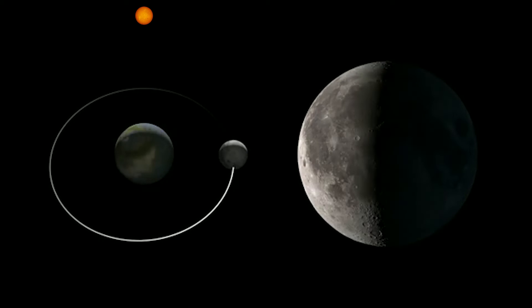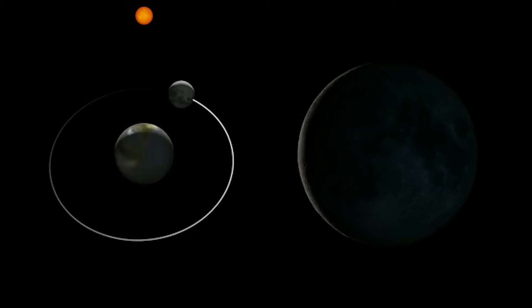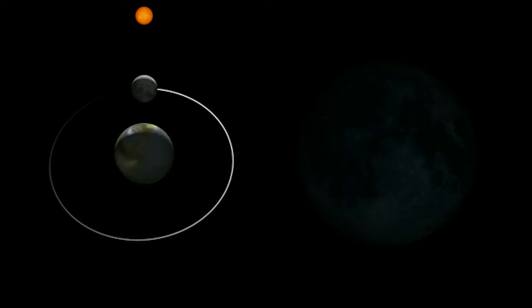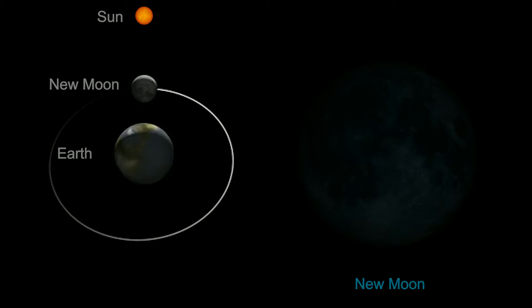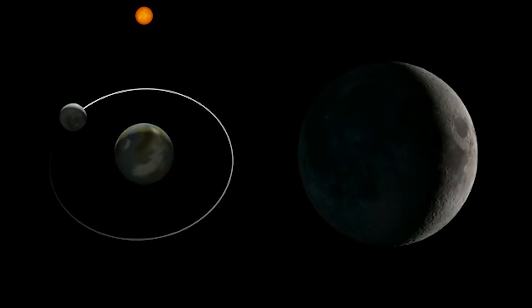Nearly 22 days after New Moon, the Moon is now at its last quarter phase. Eventually, in a further seven days, it will complete its cycle and return to where it is located between the Sun and Earth. Solar eclipses only occur during a New Moon phase.